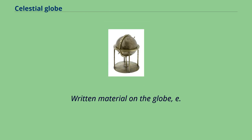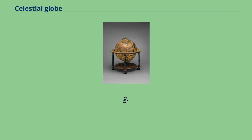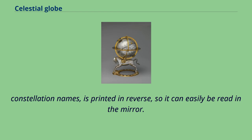Written material on the globe, e.g. constellation names, is printed in reverse, so it can easily be read in the mirror.